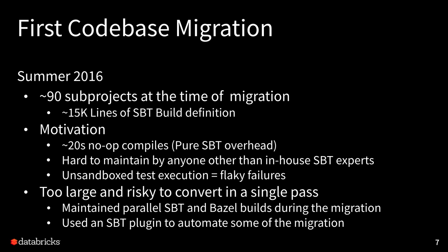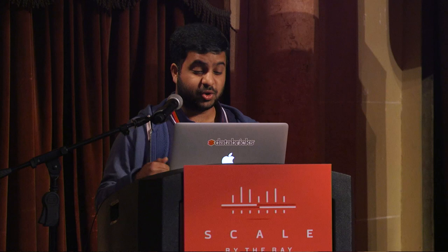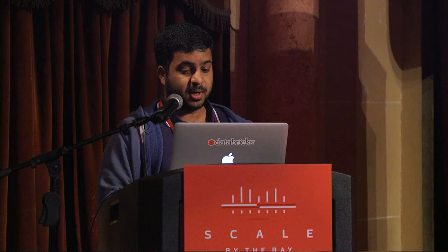We realized that a wholesale migration — merging one pull request to convert everything to Bazel — was too large and too risky to do in a single pass. So we took the approach of maintaining parallel builds over a three-to-four month window, and we built tooling like an SBT plugin to generate our Bazel build files to maintain this with as little overhead as possible. By September of 2016, we had fully deleted the SBT build. Local developer laptops, all of CI — everything was running on Bazel.